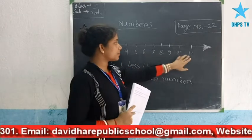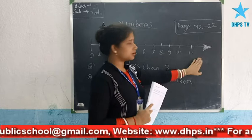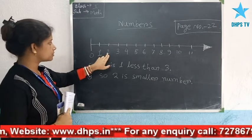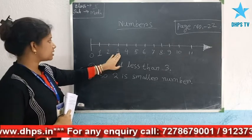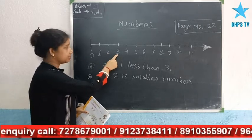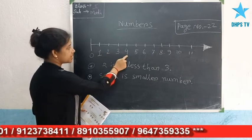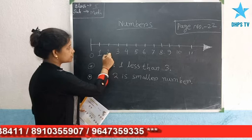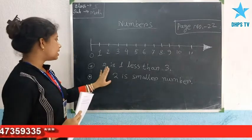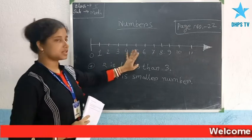I have written the numbers up to 11, and you can see there is an arrow mark. Now see — here is 1, then after 1 comes 2, then after 2 comes 3. So 2 is 1 less than 3. And here is 4, so 2 is 2 less than 4. Before 4, there are 1 and 2. That is why 2 is smaller than 3, 4, 5, 6, and so on.